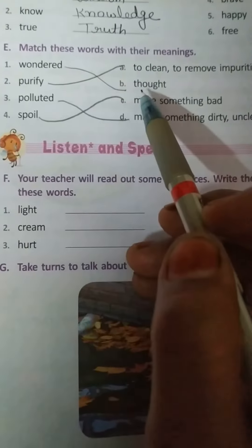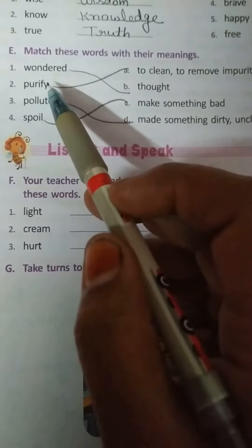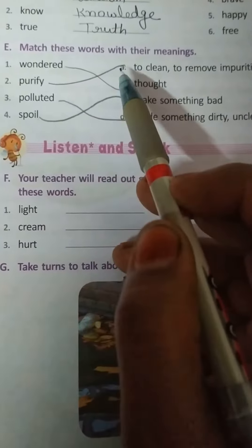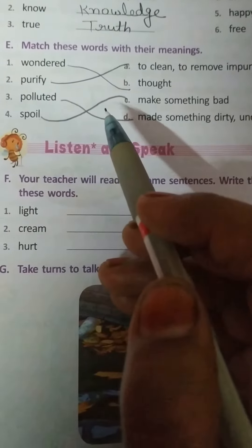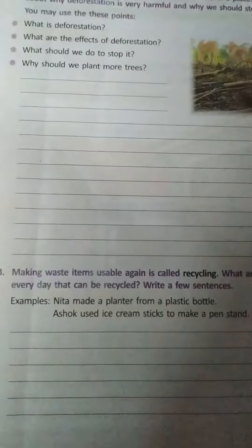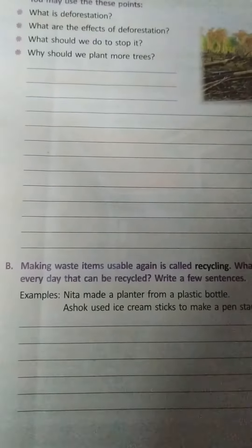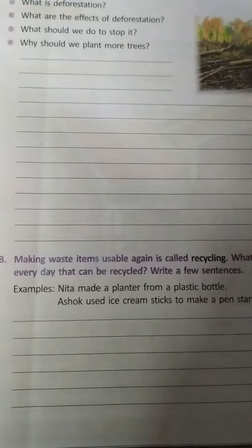First matches with B. Second matches with A. Third matches with D. And four matches with C.